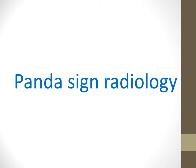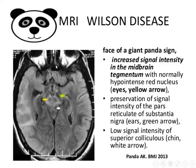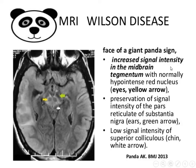Now I will talk about the panda sign. The panda sign is characteristic for Wilson disease. Is it specific for Wilson disease? It is characteristic — but is every panda sign due to Wilson disease? Rarely, it can occur in other metabolic diseases. So most of the time it will be due to Wilson disease, but rarely it may be due to other metabolic conditions.